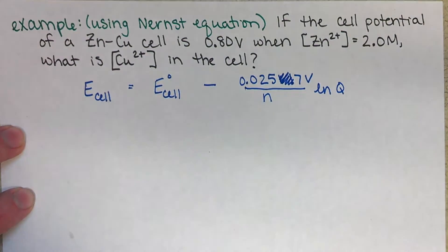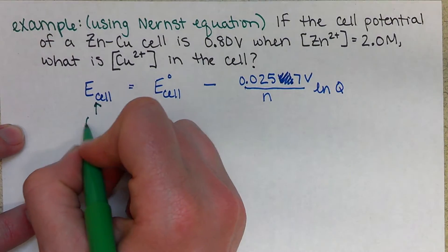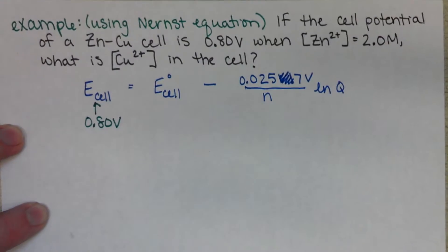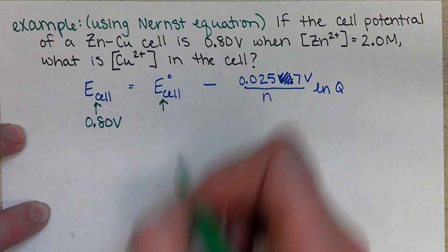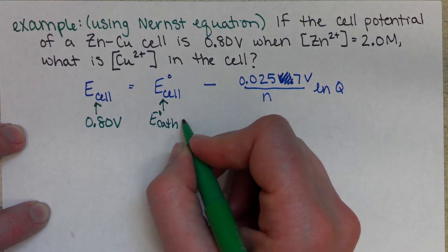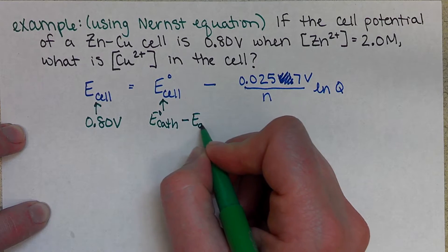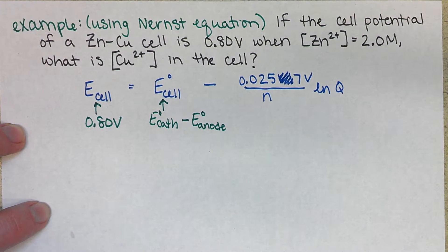We know from what's been given in the problem that E-cell non-standard is 0.80 volts. Our next task is we will calculate E-cell standard, and we'll do that by using our E-cathode minus E-anode. In order to figure out what our cathode and our anode is, we're going to have to figure out what's going to be the cathode and anode to set up a spontaneous cell.